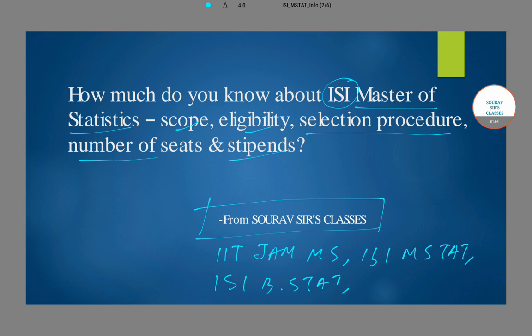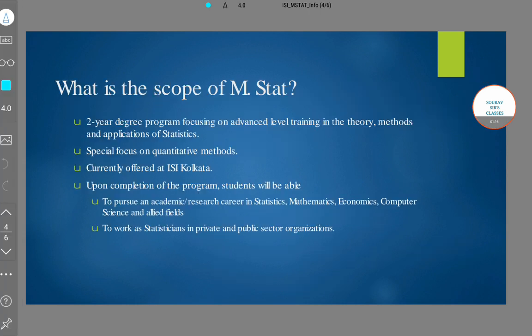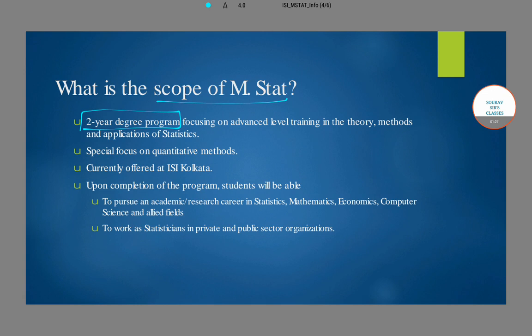Now let us shift our focus into understanding more about the ISI Master of Statistics program. This Master of Statistics program is basically a two-year degree program which focuses on imparting advanced level training in statistics. You can get into statistics, computer science, theoretical computer science, and various other fields after going through this program. There is a special focus on quantitative methods, and the program is currently offered at the ISI Kolkata campus.